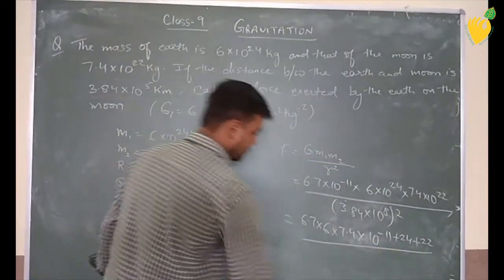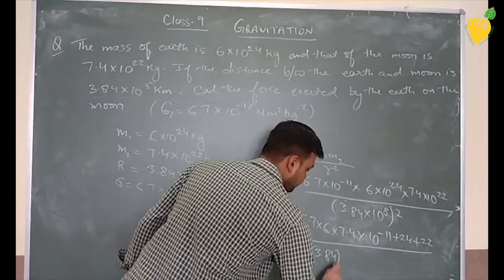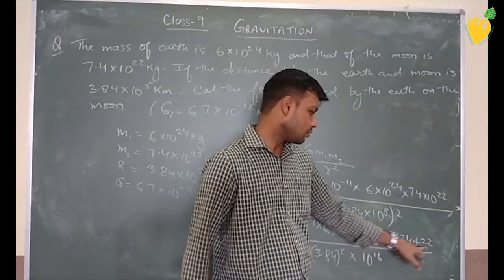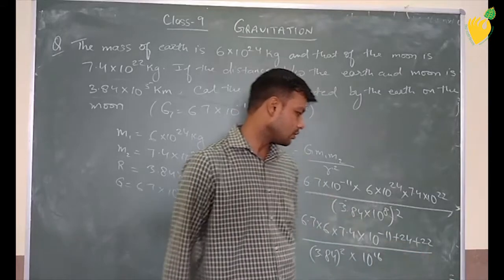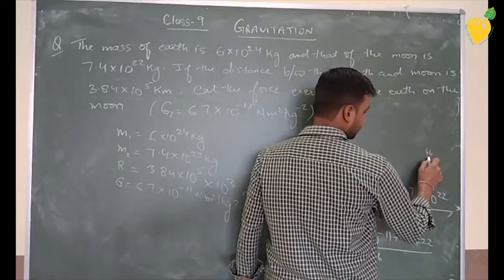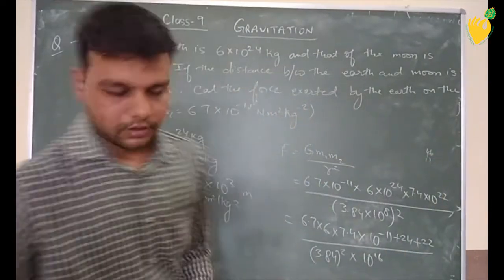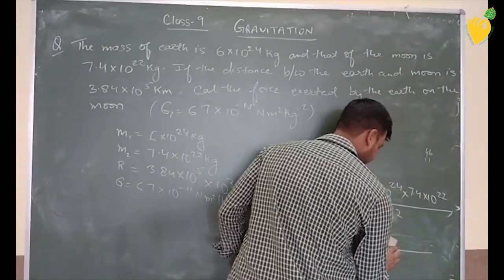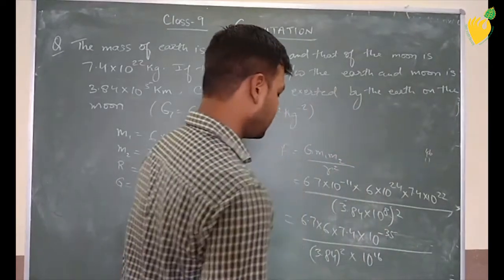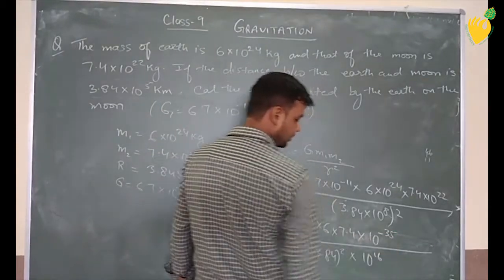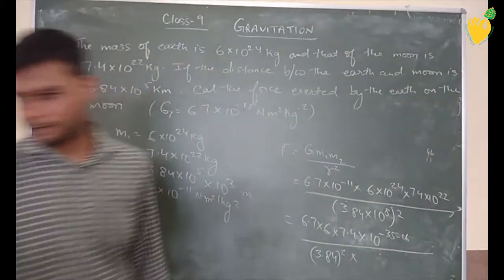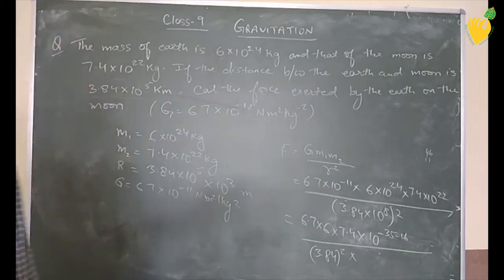Divided by 3.84 square into 10 to the power 16. Now 11, 24 and 22, 24 and 22 how much is it? 46. 46 minus 11, 46 minus 11 how much is it? 35, so here we have to go up to the left. 35, it is up to the left, minus 16, it is up to the left.